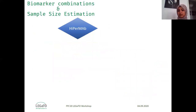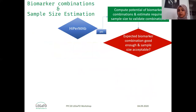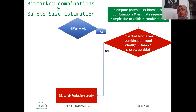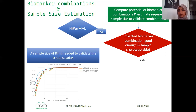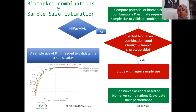As HyperMap indicates this study is worthwhile to extend, we move to the next step: computing the potential of biomarker combinations and estimating the sample size. If the combination is not good enough or the sample size is not acceptable, we discard or redesign the study. In our hip infection data, the combination was promising and a sample size of 84 is enough to validate an AUC value over 0.8. We therefore recommend proceeding with a larger sample size to construct a classifier and evaluate its performance and predictive power.